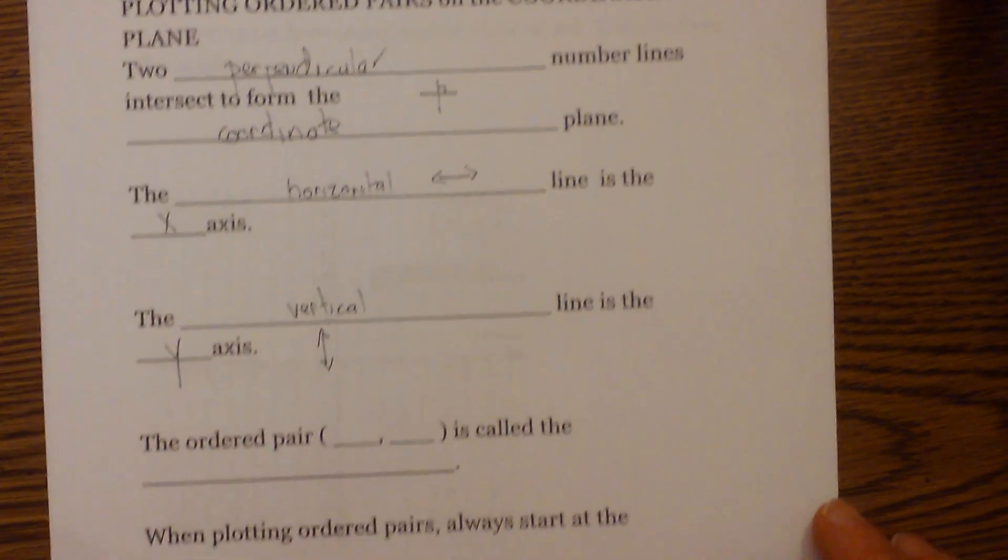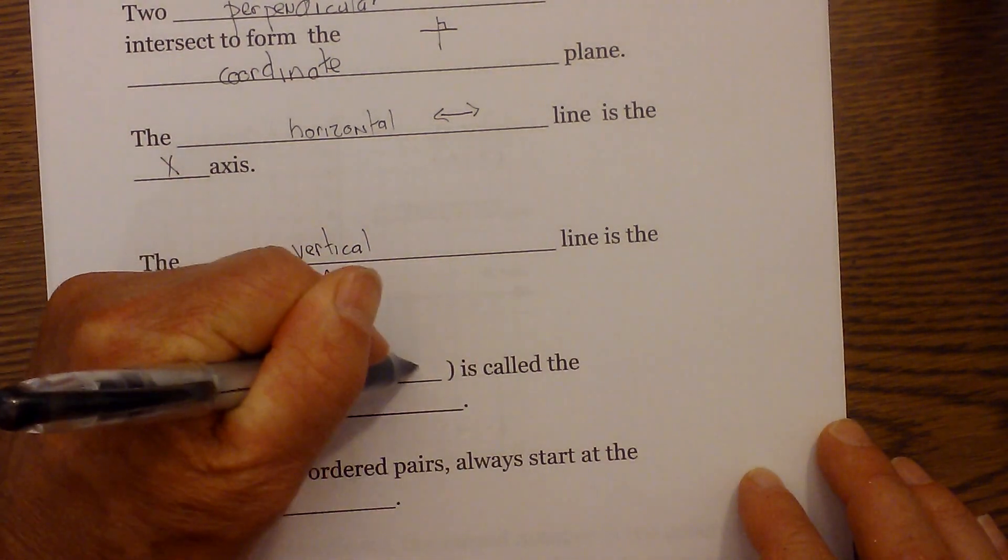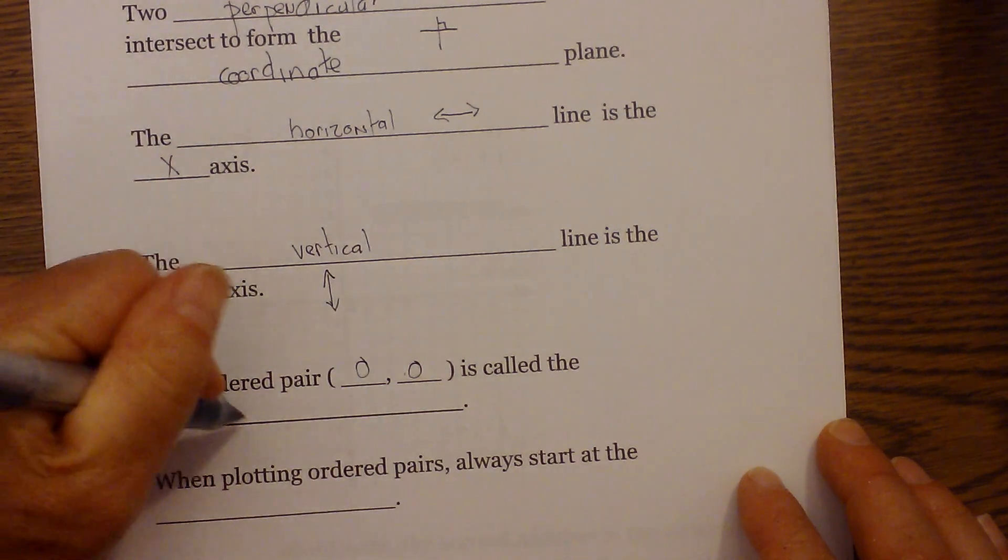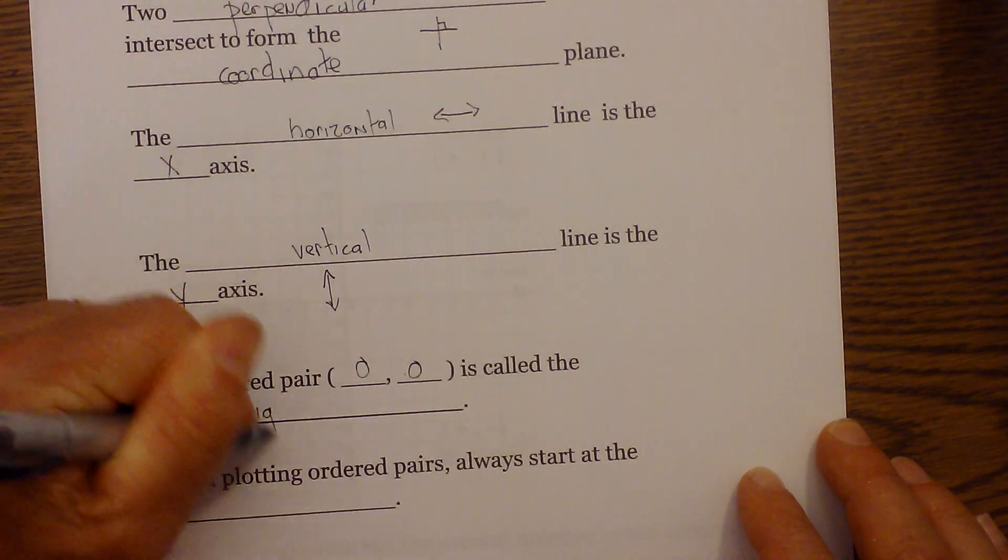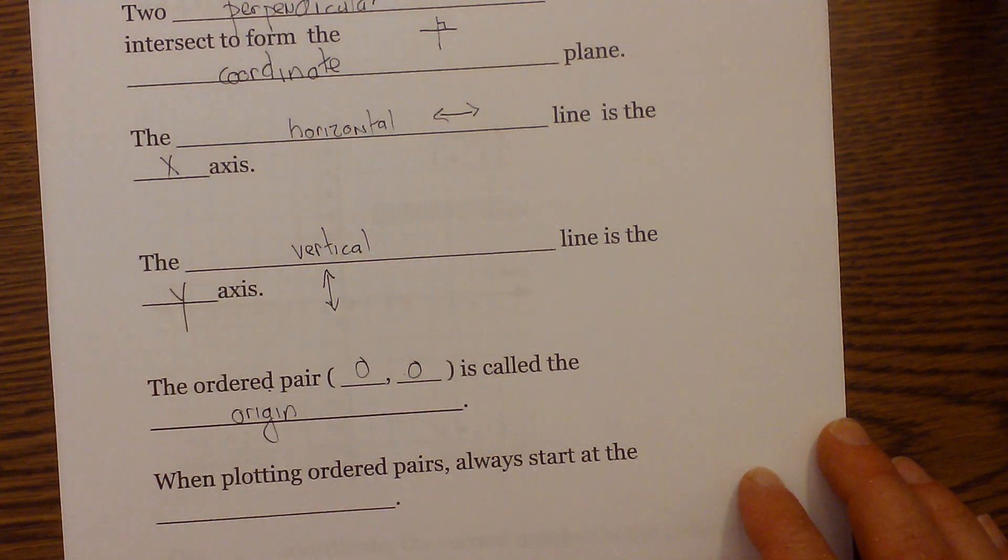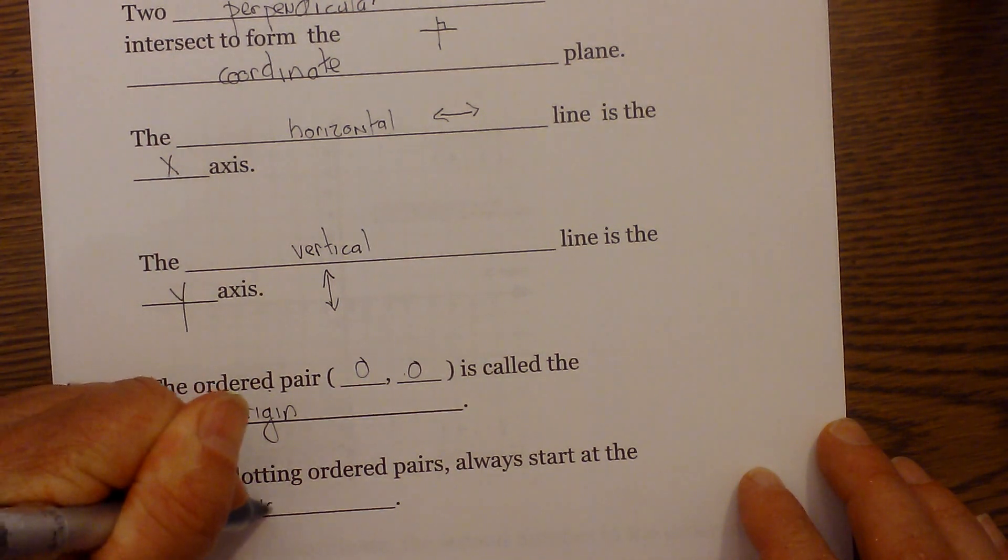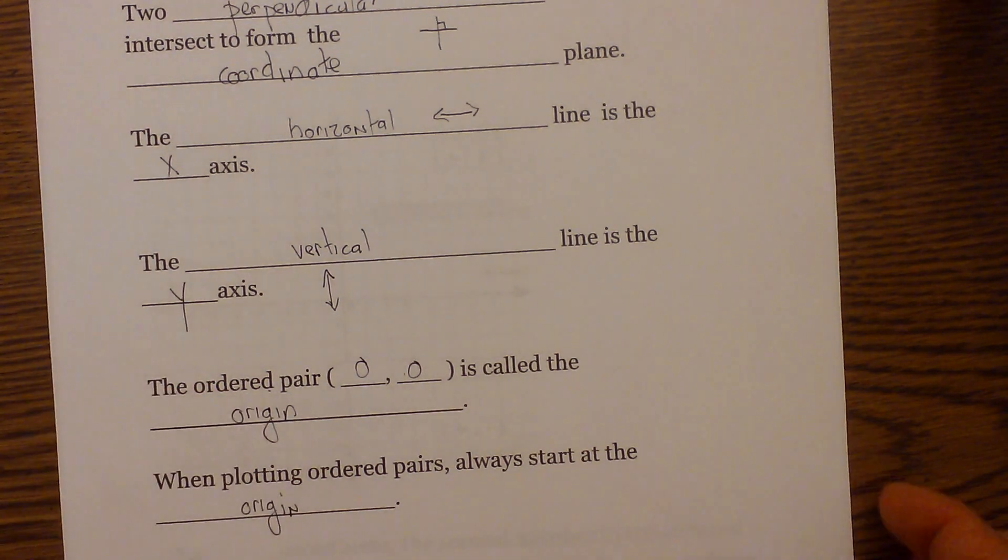Next, the ordered pair zero comma zero is called the origin. When plotting ordered pairs, always start at the origin. Again, it's zero, zero.